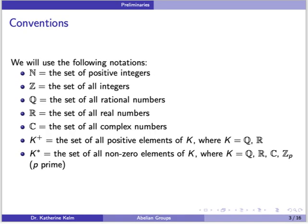We will use the following notational conventions. The set of positive integers will be denoted by N, the set of all integers by Z, the set of rational numbers by Q, the set of real numbers by R, the set of all complex numbers by C. A plus sign in the superscript will denote the set of all positive elements of that set, and K-star will denote the set of all non-zero elements of K, where K is Q, R, C, or Z_p where p is prime.